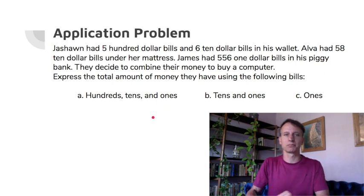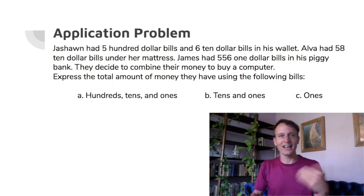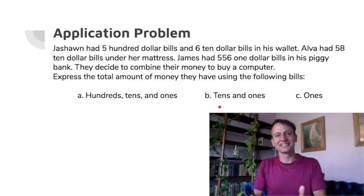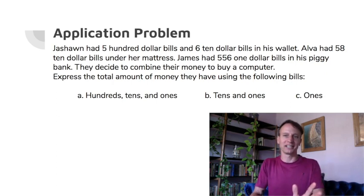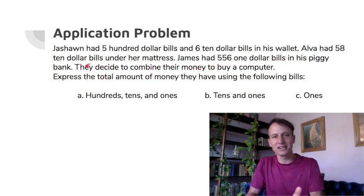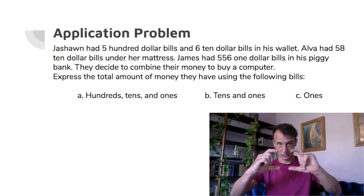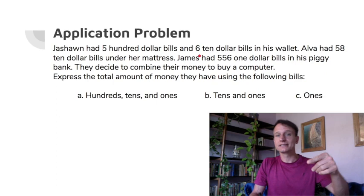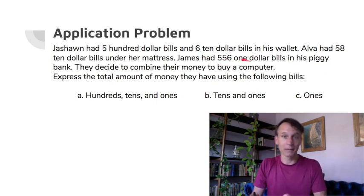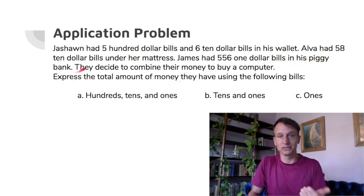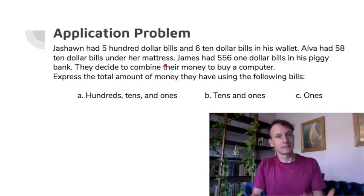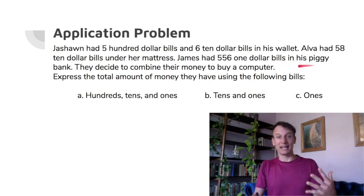Right into the application problem! These boys — well, Sean, Alva, James — they've got money. Sometimes Eureka Math word problems are dull as dirt, but this one's great. Sean had five hundred-dollar bills and six ten-dollar bills in his wallet. Alva had 58 ten-dollar bills under her mattress. James had 556 one-dollar bills in his piggy bank — that has to be a pretty big piggy bank.